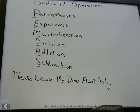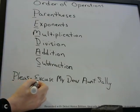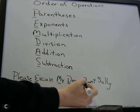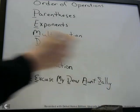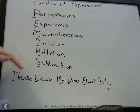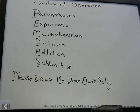So if you can remember the phrase 'Please Excuse My Dear Aunt Sally,' that's a way to remember your order of operations. You can see the P is for parentheses, E is exponents, M is multiplication, D is division, A is addition, and S is subtraction. So that is the order — this is the order we're going to do mathematical operations in. Please excuse my dear Aunt Sally. Remember that phrase.